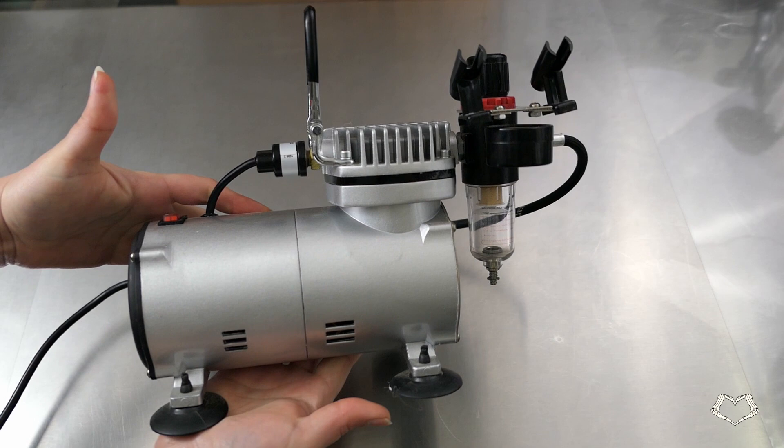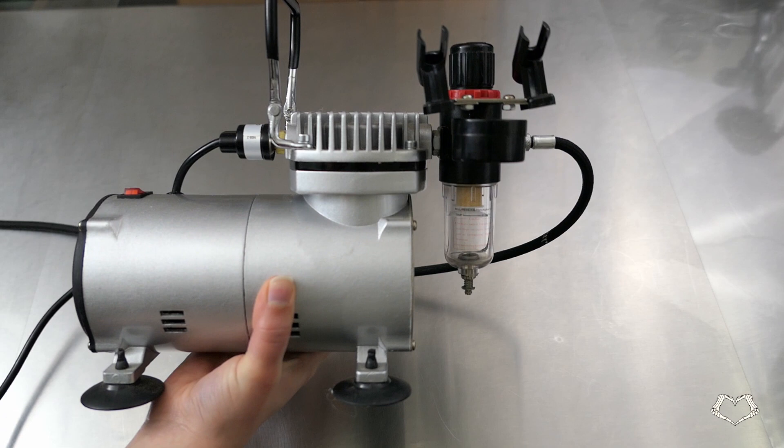This is an air compressor. This one has a water trap to prevent any moisture from coming out with the air. This is necessary, as water and cocoa butter don't like each other.